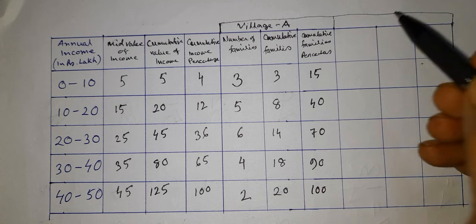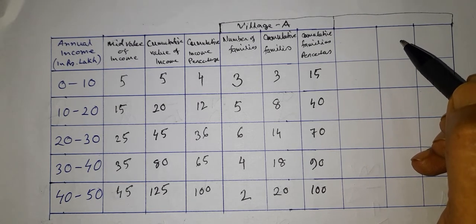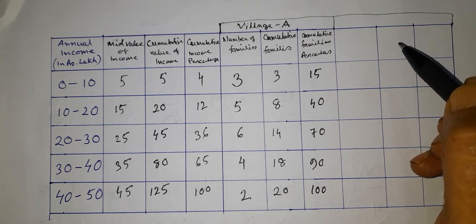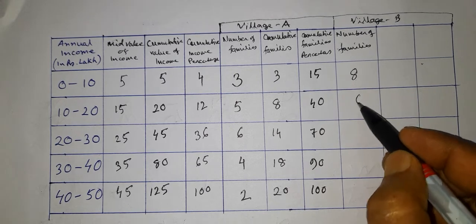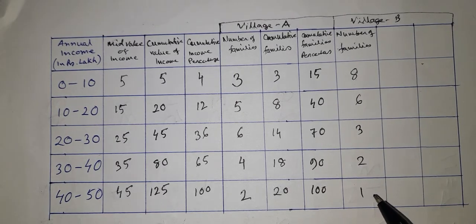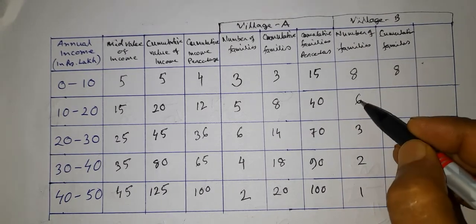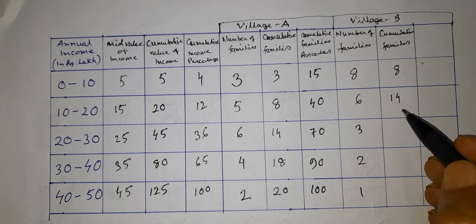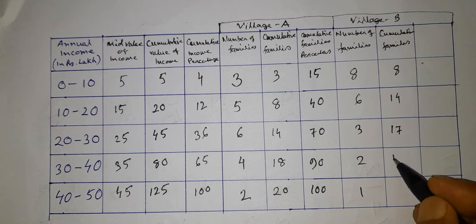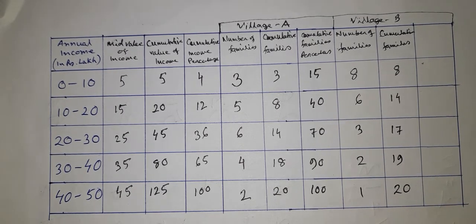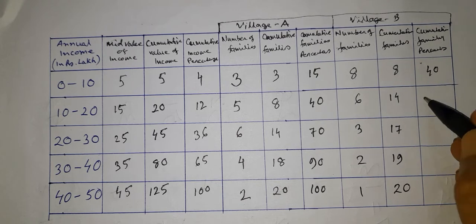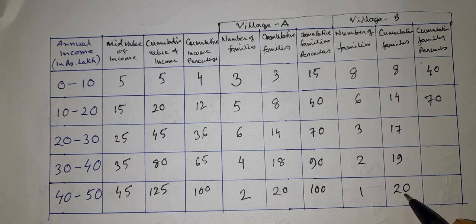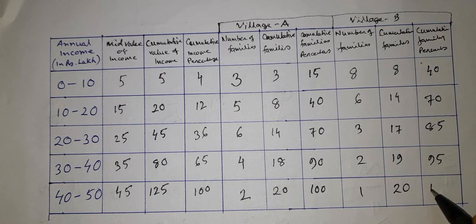Similarly, we calculate the cumulative percentage of families in village B. In village B, the number of families are 8, 6, 3, 2, 1. The cumulative families are 8, then 8+6=14, then 14+3=17, then 17+2=19, then 19+1=20. The cumulative percentages are: 8 out of 20 is 40%, 14 out of 20 is 70%, 17 out of 20 is 85%, 19 out of 20 is 95%, and 20 out of 20 is 100%.